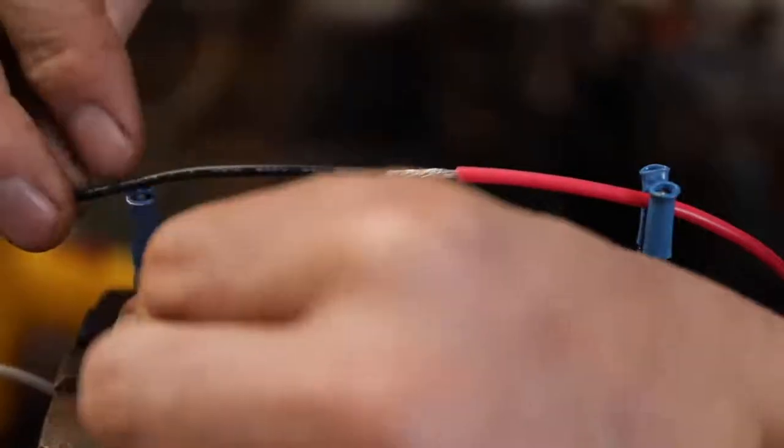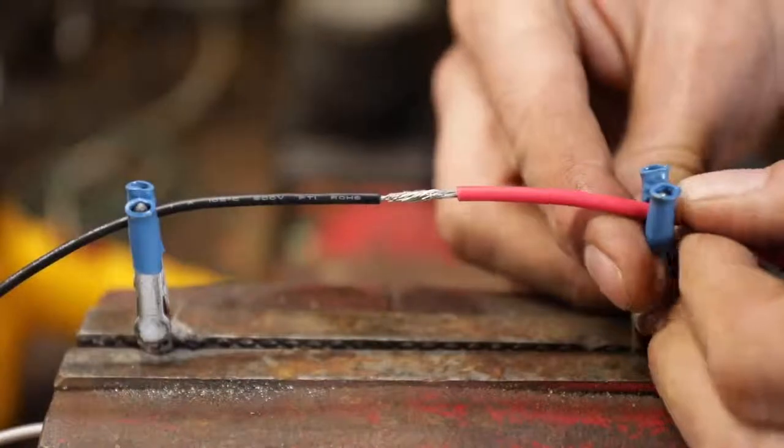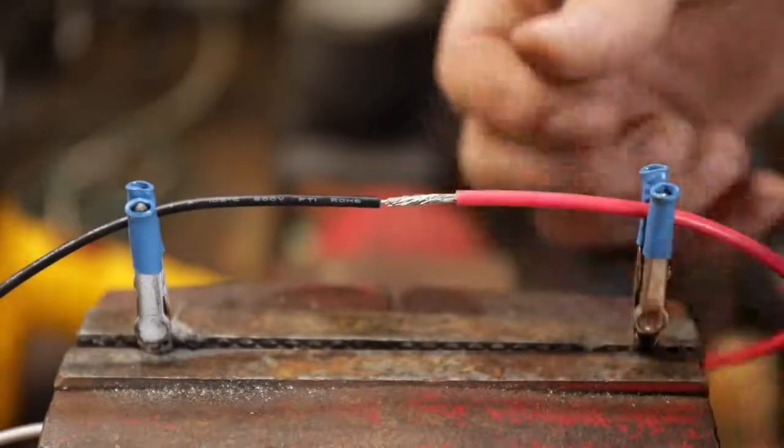Twist this side here and then twist this side over here like that. That's going to give you the cleanest, the smallest connection because we're going to shrink this, and it's going to be a little more low profile and look a little better.